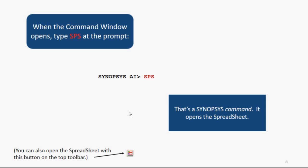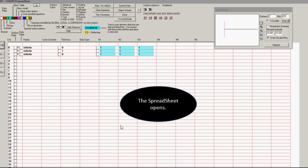When the command window opens, you type SPS, spreadsheet, or you can click the button that does the same thing. It opens the spreadsheet, which looks like this.